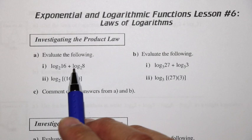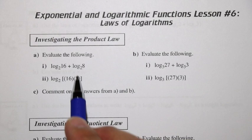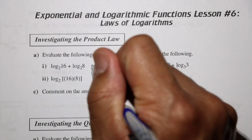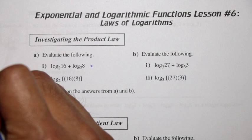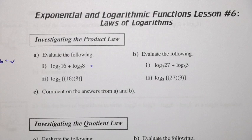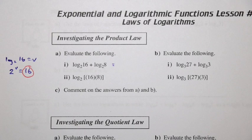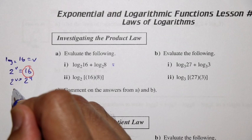Let's take a look at the product law. We have log base 2 of 16 plus log base 2 of 8. If we evaluate the first one — log base 2 of 16 equals some unknown value v — then in exponential form, 2 to the v equals 16. Since 16 can be written as 2 to the 4, we find that v equals 4.